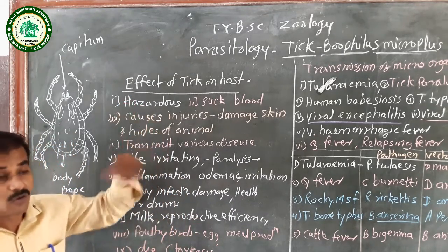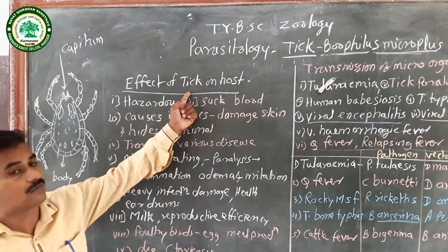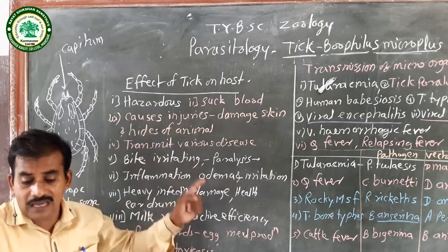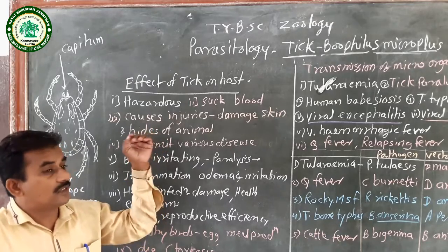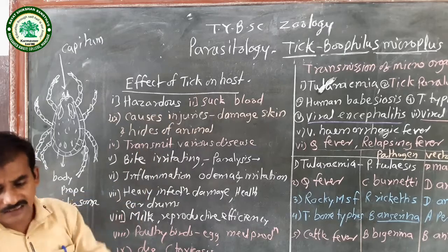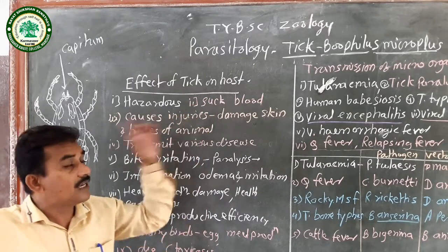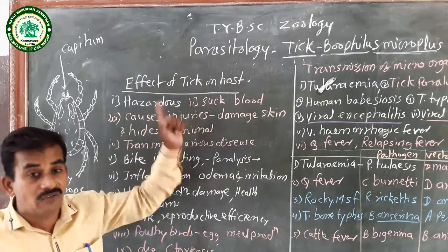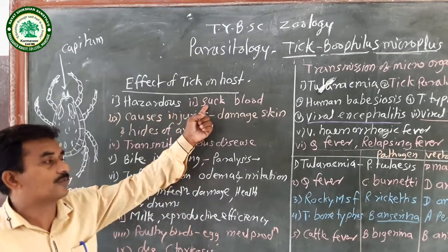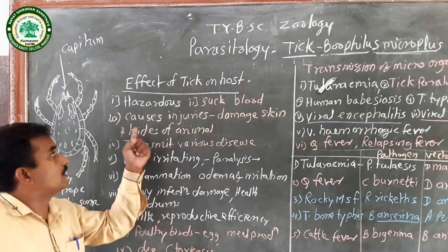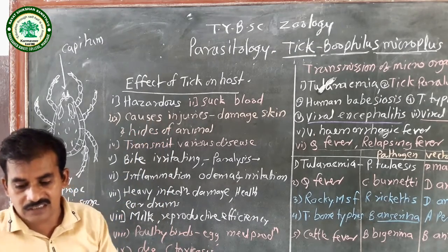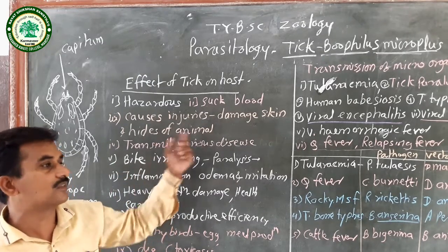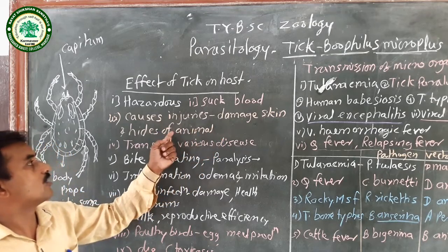Due to the tick infection, a large number of symptoms and effects on the host body occur. The tick is a hazardous animal to man and his domestic animals, producing a number of infections by sucking the blood. Due to the sucking of blood, damage to the skin occurs — every time they puncture the skin, they release saliva, and due to this saliva, skin irritation and a large number of injuries result.